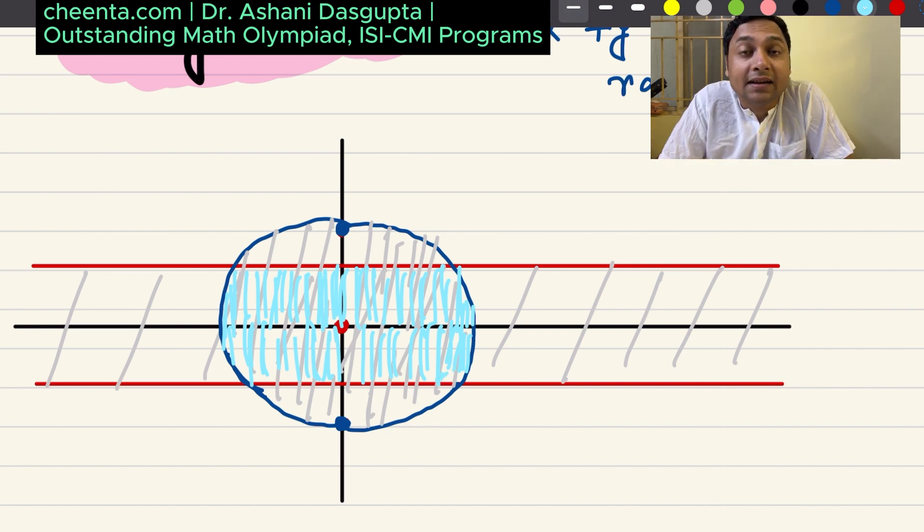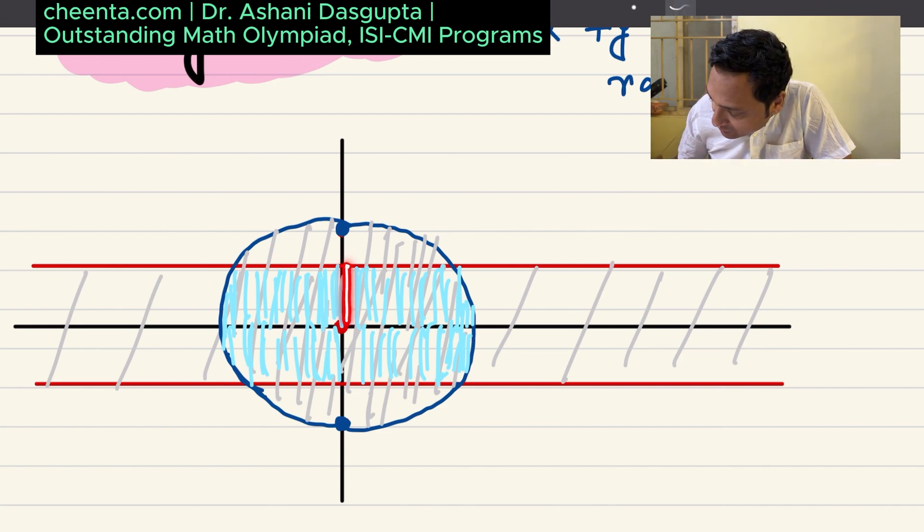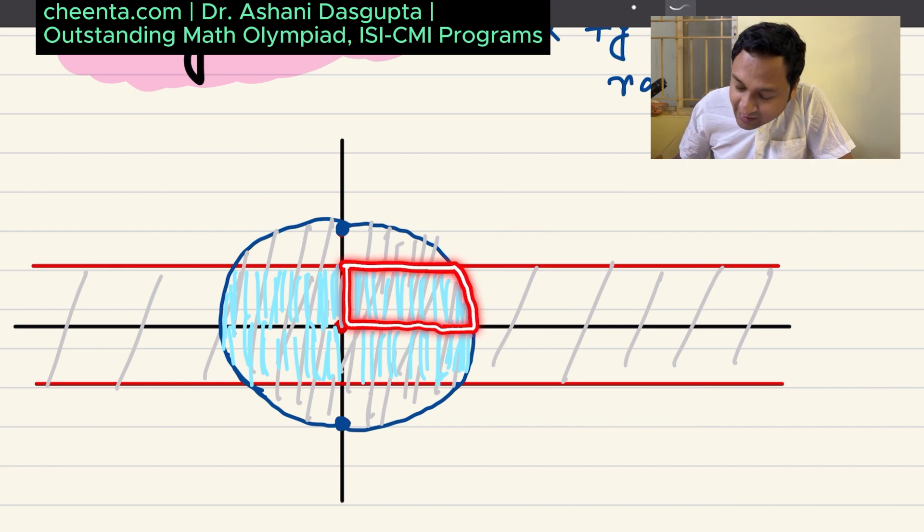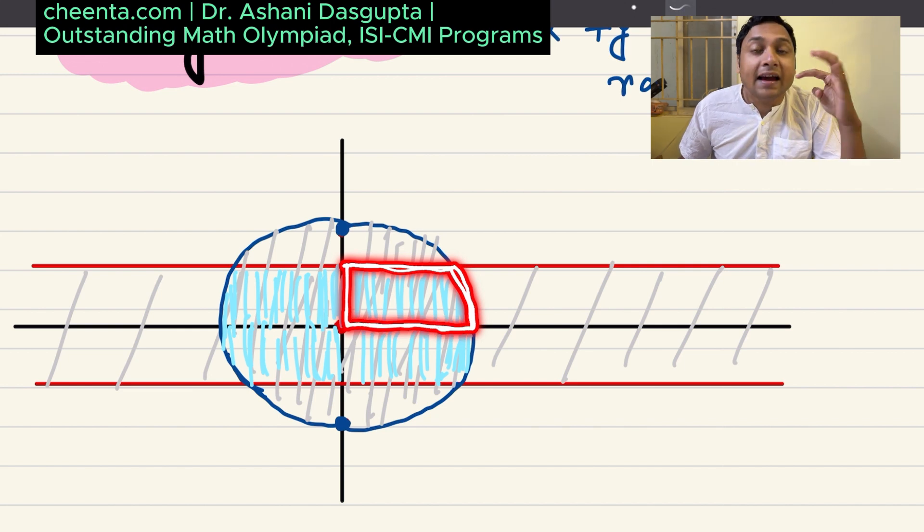If you know calculus, then the solution can be immediate. What you can do is that you can find the area of this little piece, and by symmetry, if you make it four times, then you get the answer. Just find the area of this little piece and make it four times. And how do you compute the area of this?